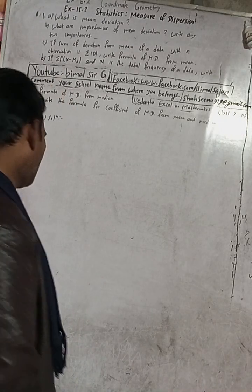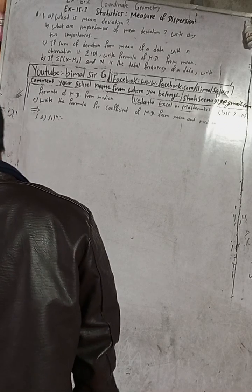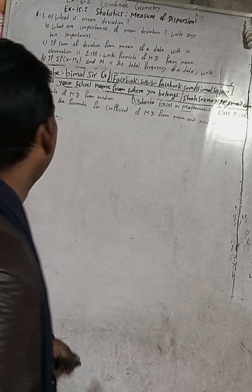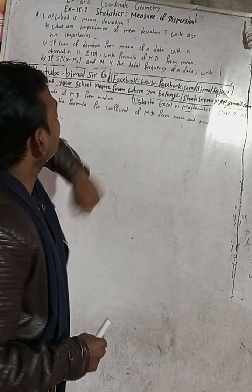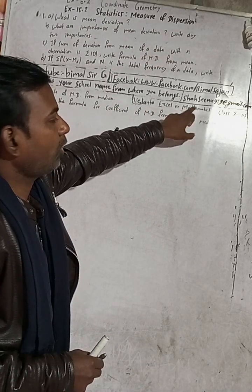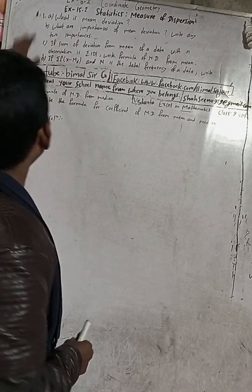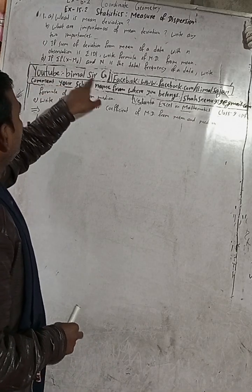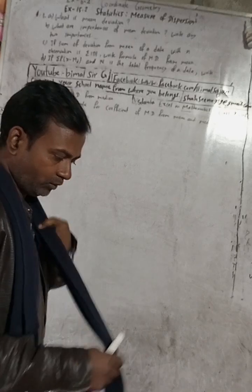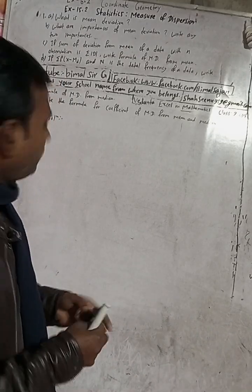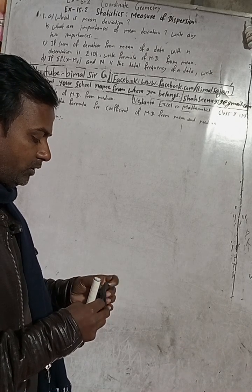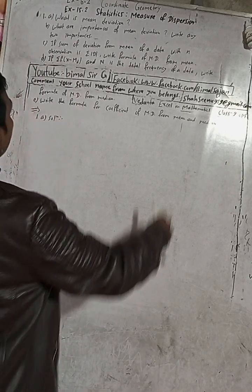Hi Class 9 and 10 students, welcome back to Pimal Sarji YouTube channel. In this chilly cold season, I am here to warm up your days and nights with exciting content. Here the question is number one, Exercise 15.2, Statistics - Measure of Dispersion. This is optional mathematics Class 9. Don't forget to check the playlist where you will get a lot of solutions for Class 9 and also a few for Class 10.